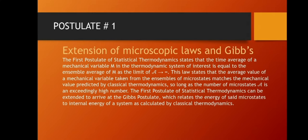Our first postulate was the extension of microscopic laws and Gibbs. The first postulate of statistical thermodynamics states that the time average of a mechanical variable M in the thermodynamic system of interest is equal to the ensemble average of M as the limit of A, which is infinite. This law states that the average value of a mechanical variable taken from the ensembles of microstates matches the mechanical value predicted by classical thermodynamics, so long as the number of microstates A is an exceedingly high number — that's why it's infinite.